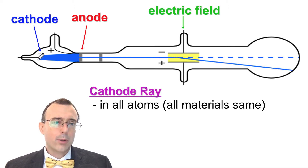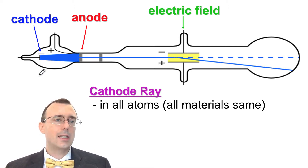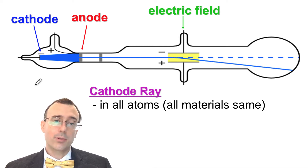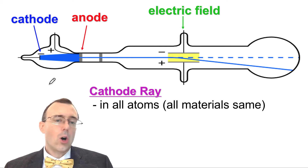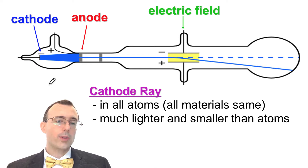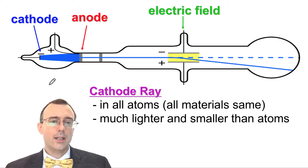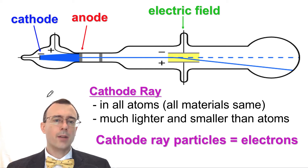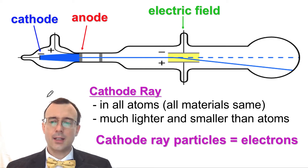Why did he conclude that? Because no matter what material he used for the cathode — whether copper, iron, zinc, gold, or silver — his results were all the same. This means that all these different materials, all atoms, have these cathode rays in them. Through his calculations he also noticed that the cathode ray was much, much lighter than atoms. Later scientists called these cathode rays electrons — so this whole time, people were discovering and investigating the electron, which is inside the atom.